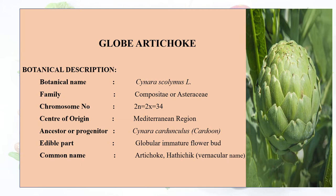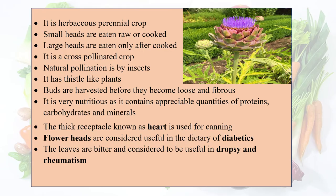The plant has distil-type sharp pointed leaves, as seen in the picture. Most of the globe artichoke is harvested in young stages in bud form. It is a herbaceous perennial crop. Small heads are eaten raw or cooked.